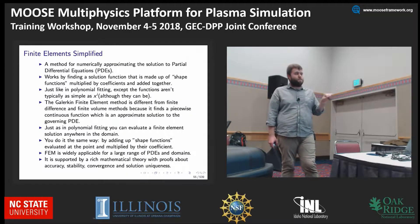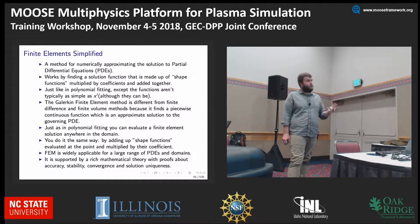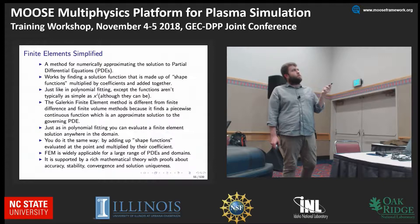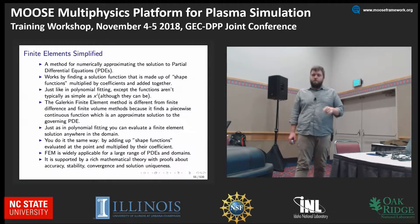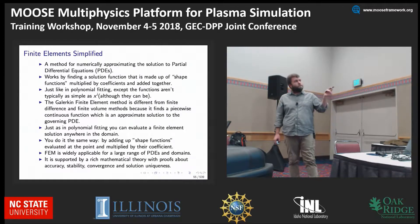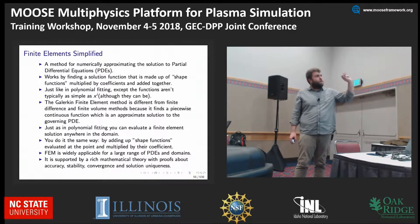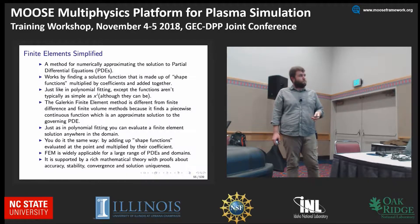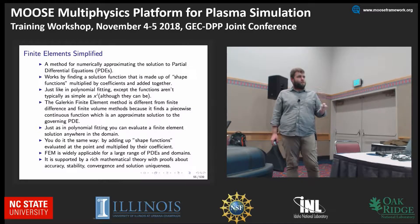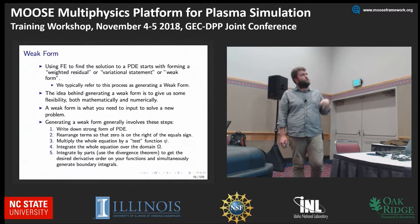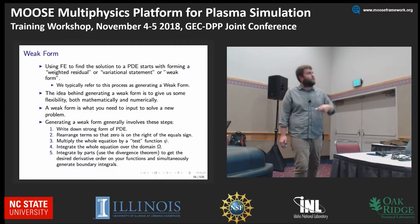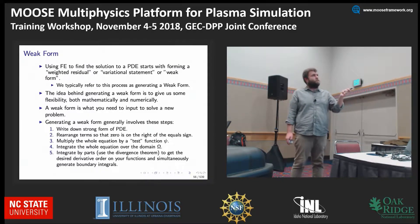Finite elements is numerically approximating a solution to PDEs — we're doing what we just did, but with a set. The Galerkin finite element method is different from finite difference and finite volume because it finds a piecewise continuous function that's an approximate solution. You are adding up shape functions, evaluating at the point, multiplying by your coefficients. It has a longer mathematical history — the idea of a weak form, variational statement, or weighted residual — you'll find it in the literature under all these names.